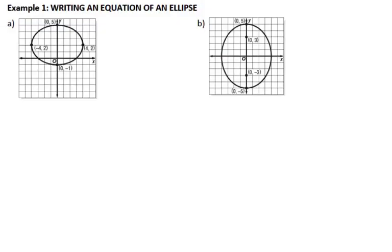Our first example: we are given the graph of an ellipse. From the graph it's pretty easy to tell where your center is — your center is right in the middle. So my center for this ellipse is at (0, 2). Now another thing I need to make a note of is the direction in which my major axis is going. Your major axis is the longer portion of your ellipse, and I can see that is a horizontal major axis.